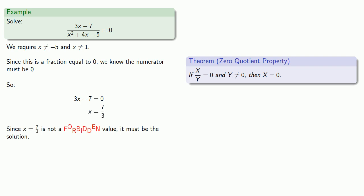And again, the most important thing to remember is that we do have some forbidden values here. And so we can never let x be negative five or one. But since x equals seven thirds is not a forbidden value, it must be our solution.